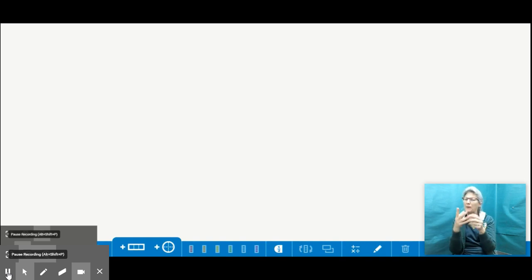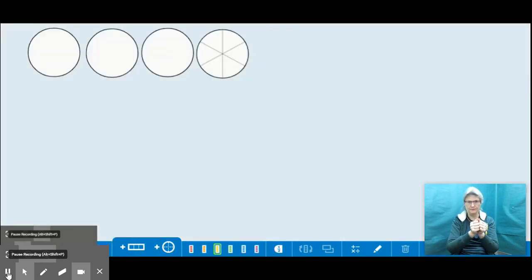All right, well in order to make sense of this problem, I'm going to draw a model. So I need to draw three and four sixths because that's what they started with. All right, I have my three and four sixths.